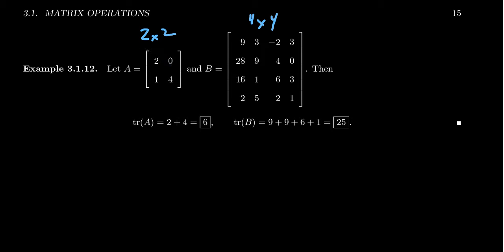If we want to do the trace of B, we're going to add together the main diagonal, which are going to get 4 entries in this one, since it's a 4 by 4 matrix. You're going to get 9 plus 9 plus 6 plus 1, which adds up to 25. And then that's the trace of the matrix.